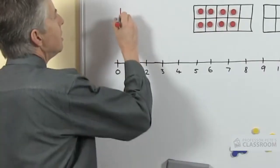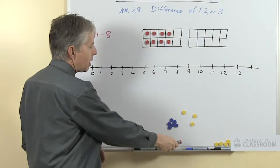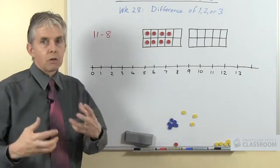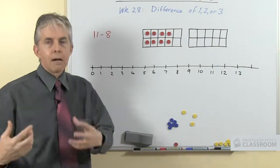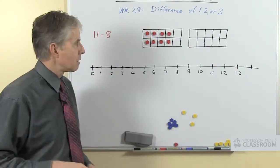So let's start with the question 11 minus 8. Now I'm saying minus rather than take away, deliberately, because we're not taking away. We don't have a strategy where we're going to count backwards by 8 or something like that, but we're looking at the two numbers and comparing them.